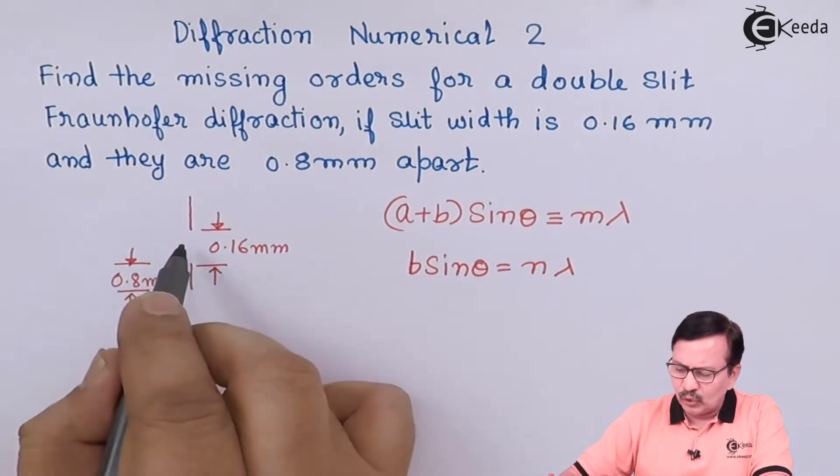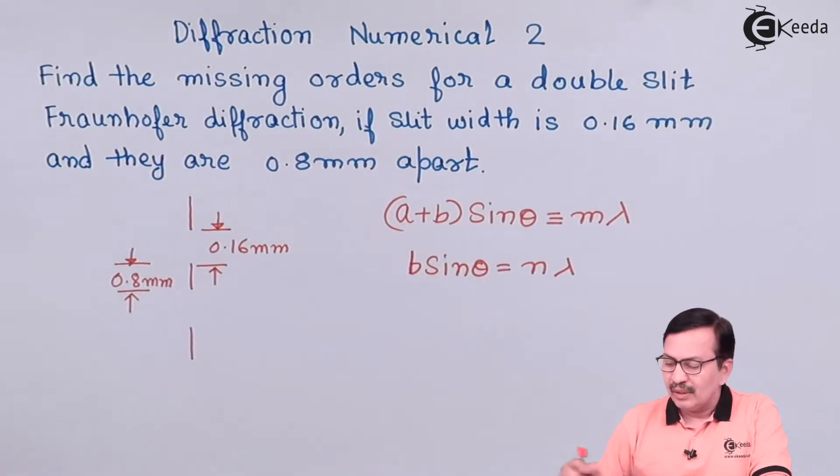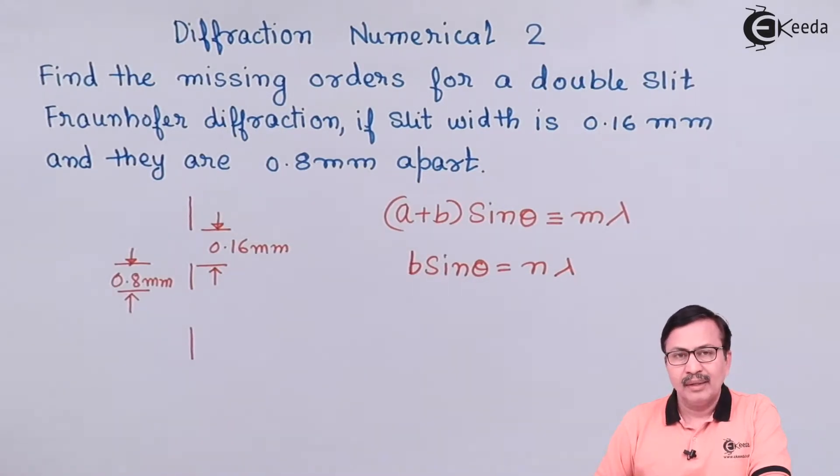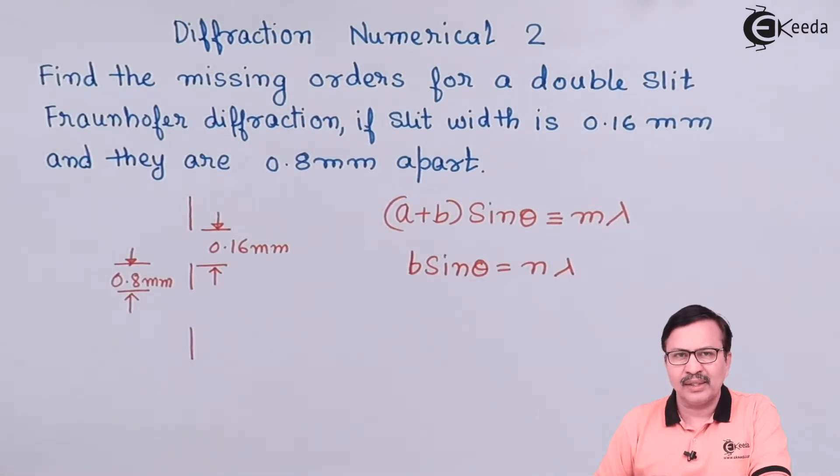Remember, there are two slits in this double slit. So for each of the slits the minimas will actually appear as b sin theta is equal to n lambda. So on the screen when both these conditions are satisfied, you will have 0 intensity and these orders will be missing.